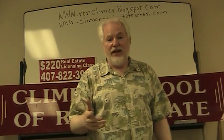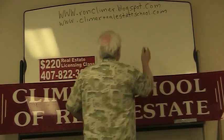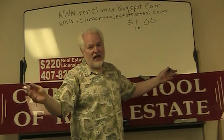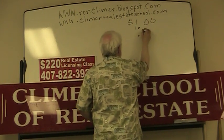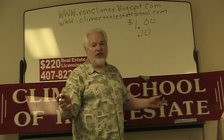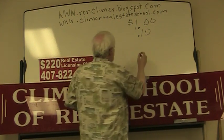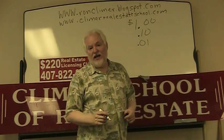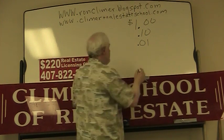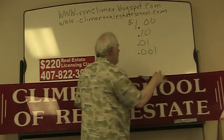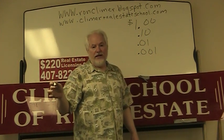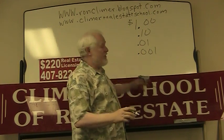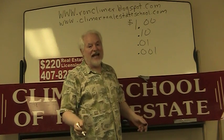Taxes are based on mills, so let me explain what a mill is. Everybody recognizes one dollar, ten cents or one-tenth of a dollar, and one penny or one-hundredth of a dollar. Well, a mill is .001 — it's one-tenth of a penny, one-thousandth of a dollar. And it's the way the government tells you how much your taxes are.